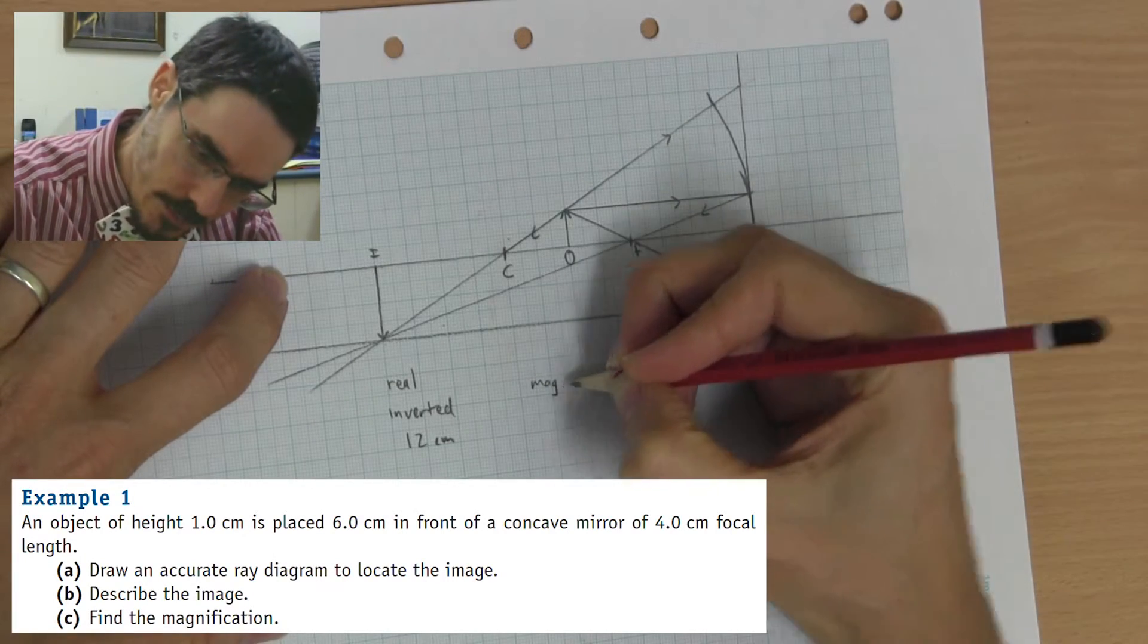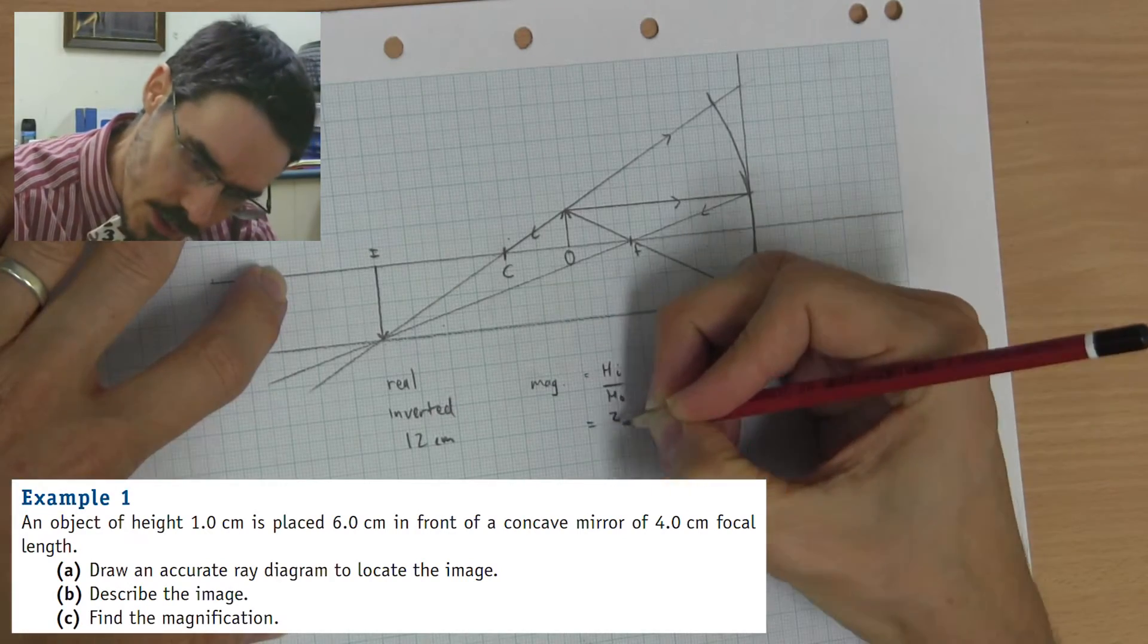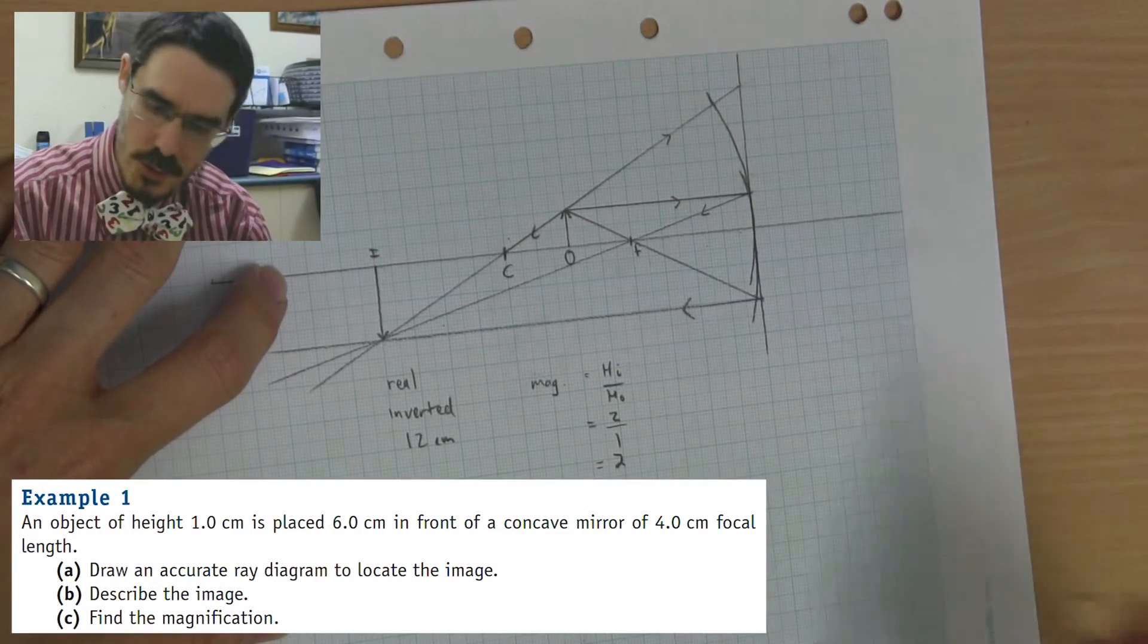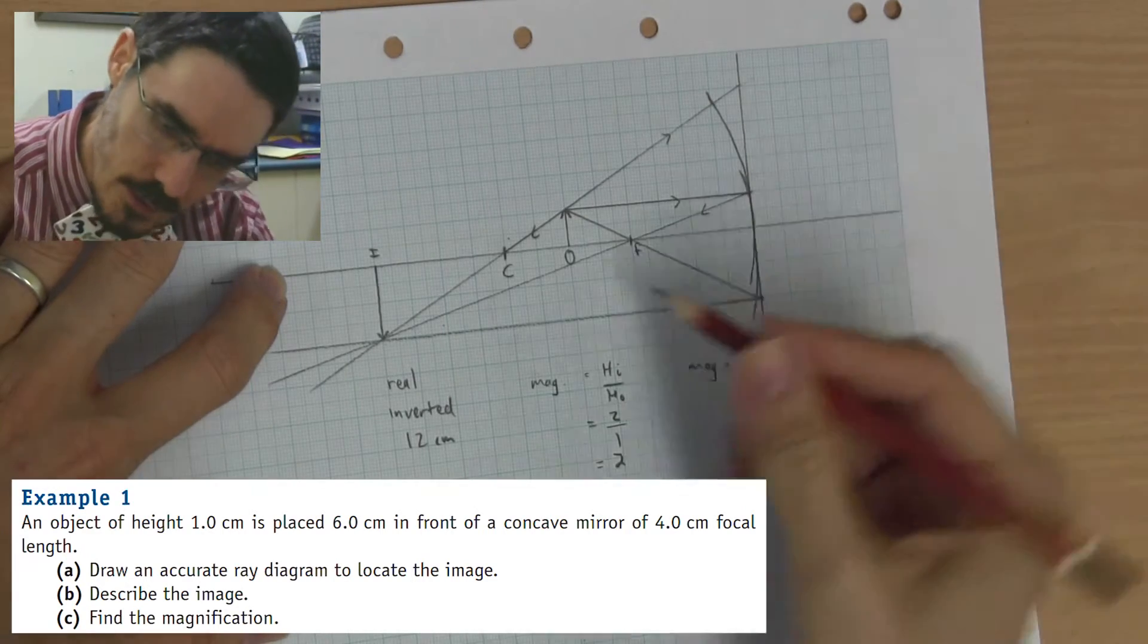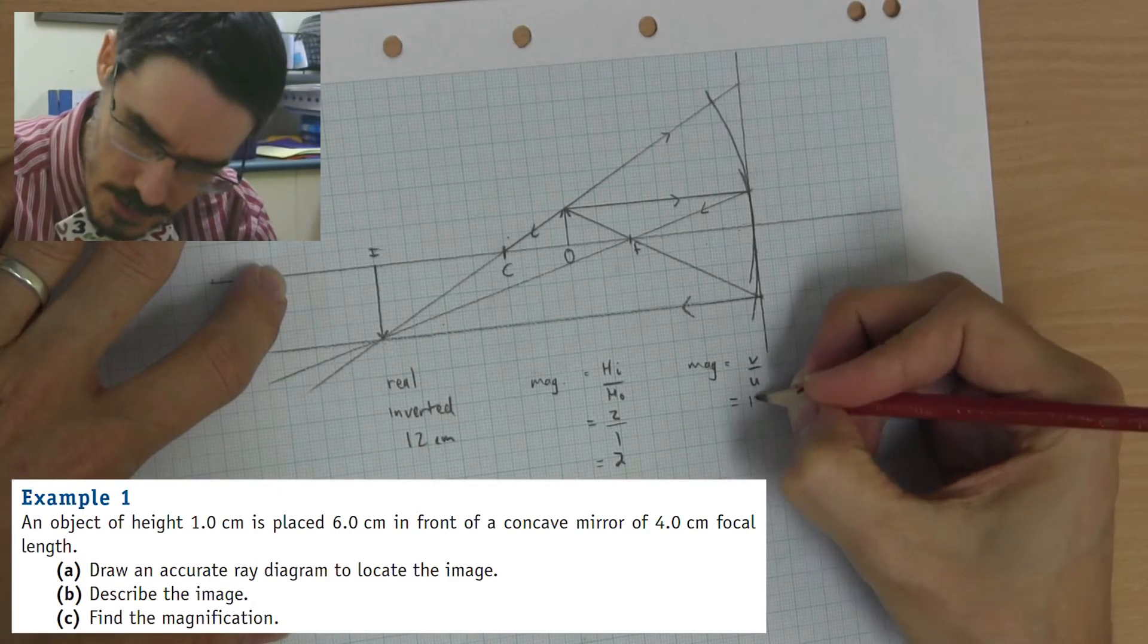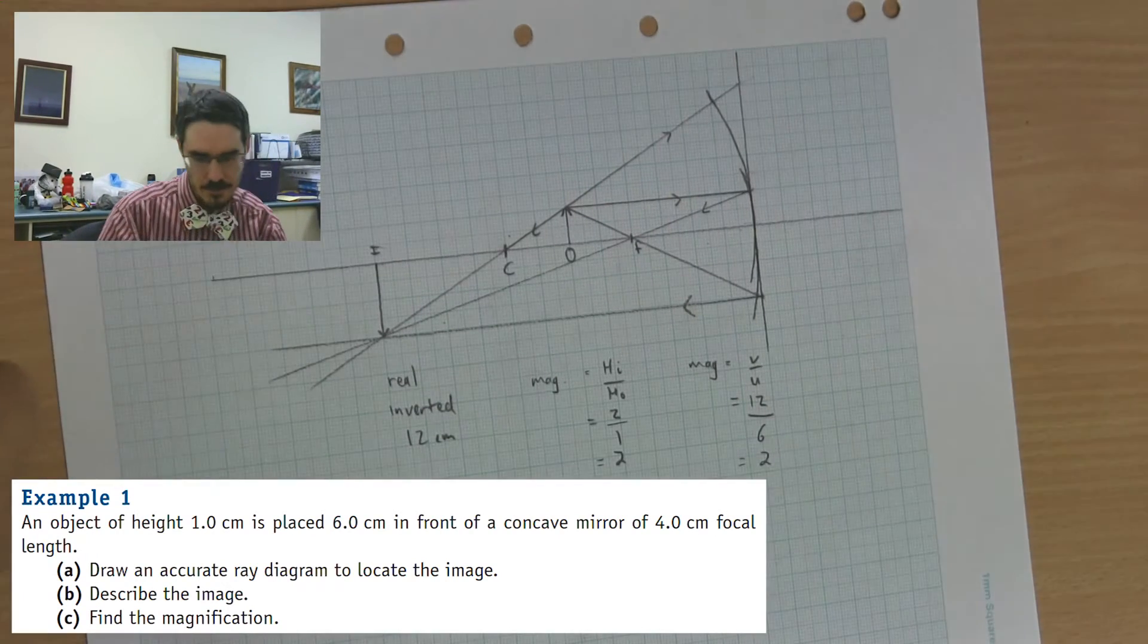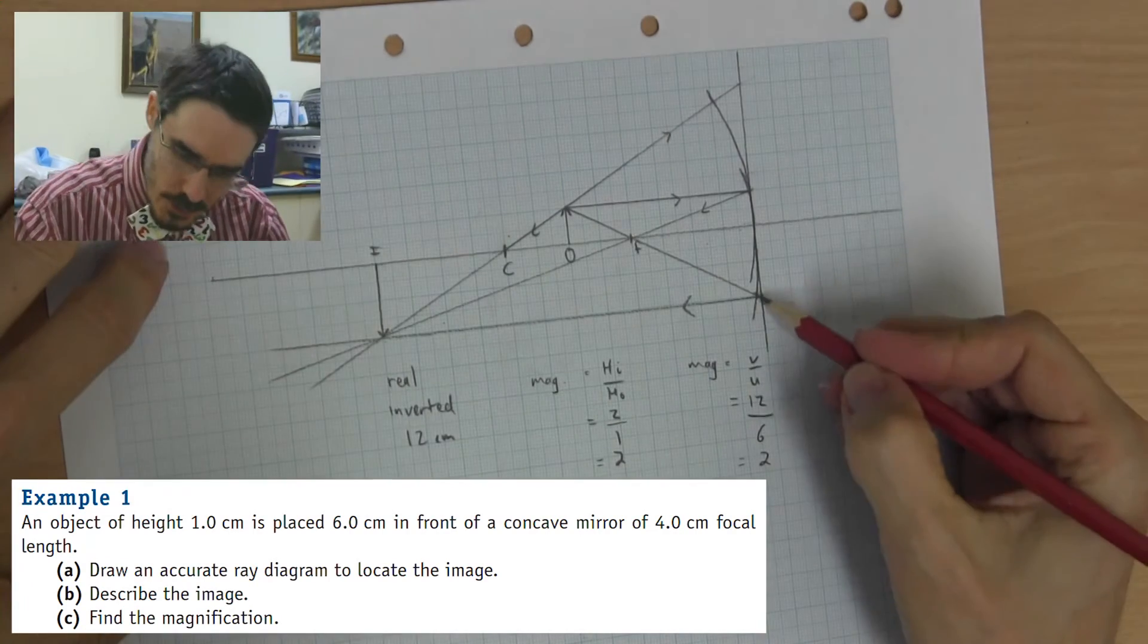The magnification is the height of the image over the height of the object, which is 2 over 1, which is 2 times. You could do it just the same by saying magnification is v over u. Distance to the image is 12 centimetres. Distance to the object is 6, which is 2. In practice, it's more like 1.8 because of this curvature.